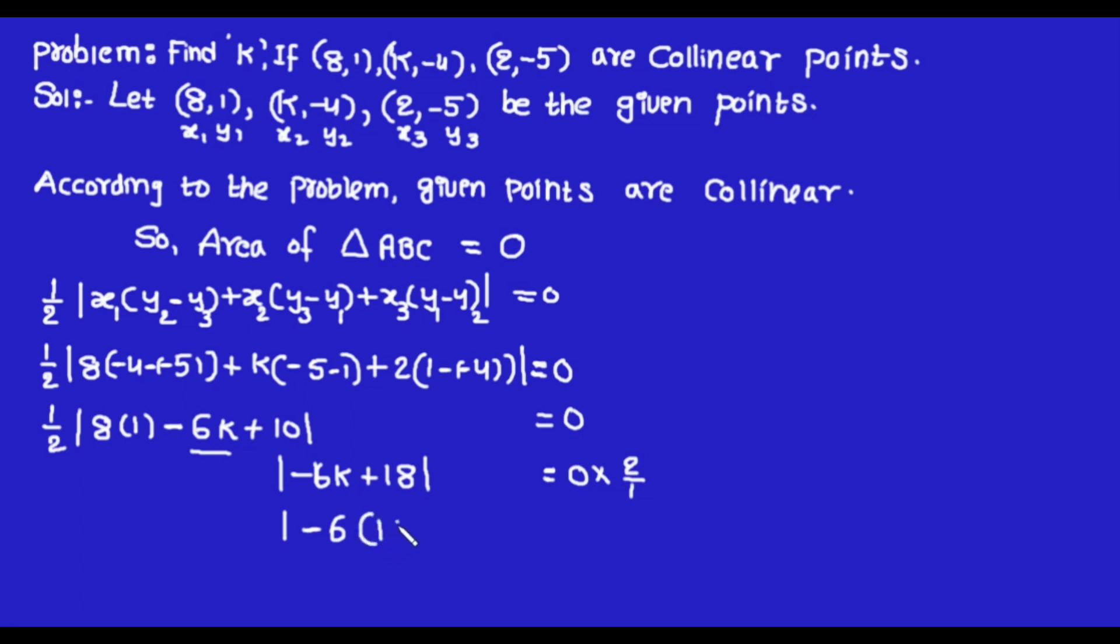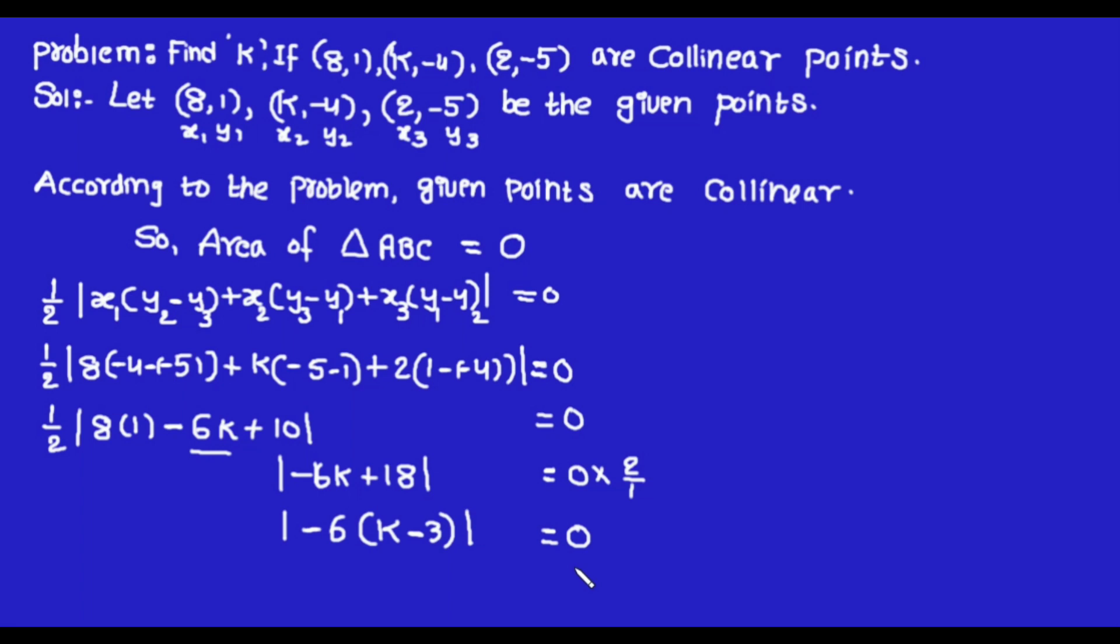So by taking out -6, the left-hand side can be written as -6(k-3) = 0. We know that the determinant of -x equals x. So LHS can be written as 6(k-3) = 0.